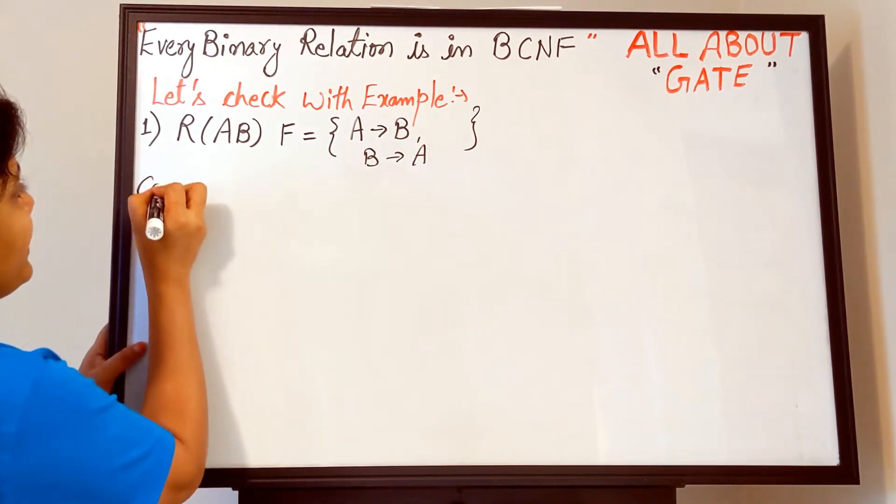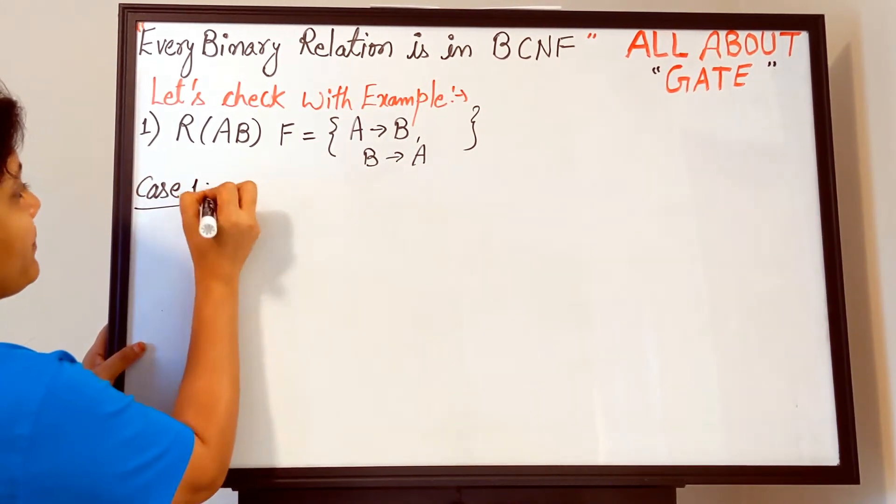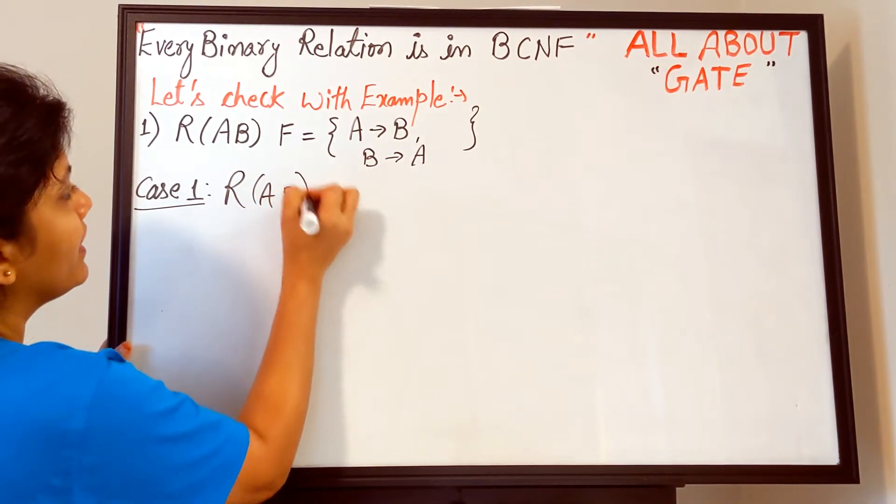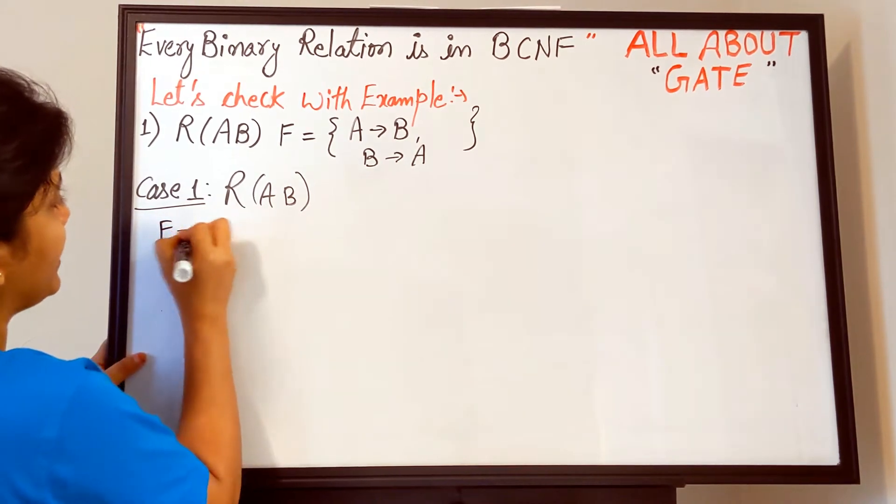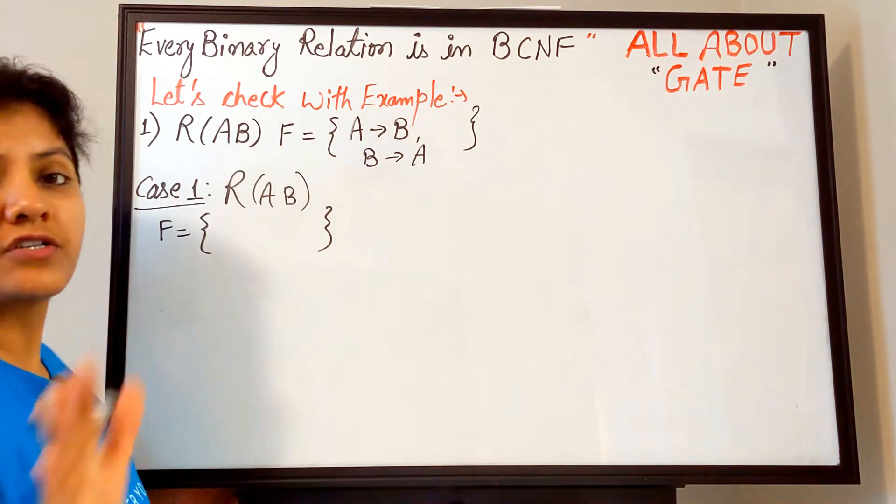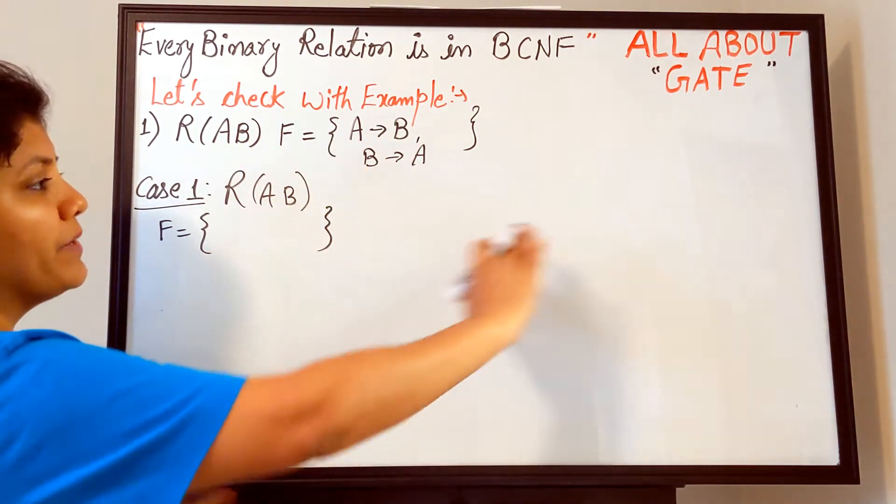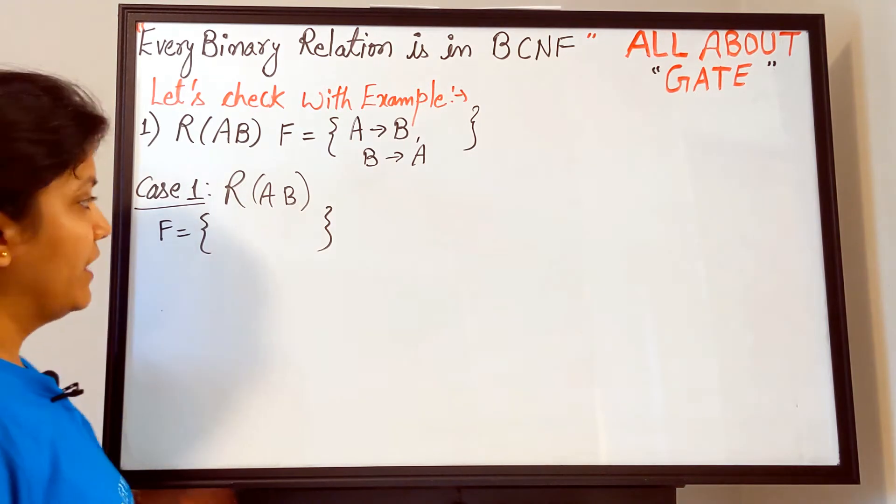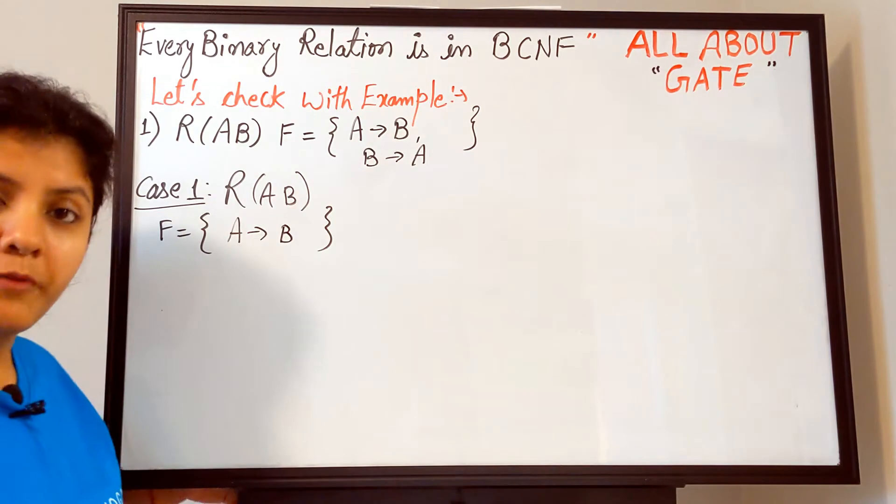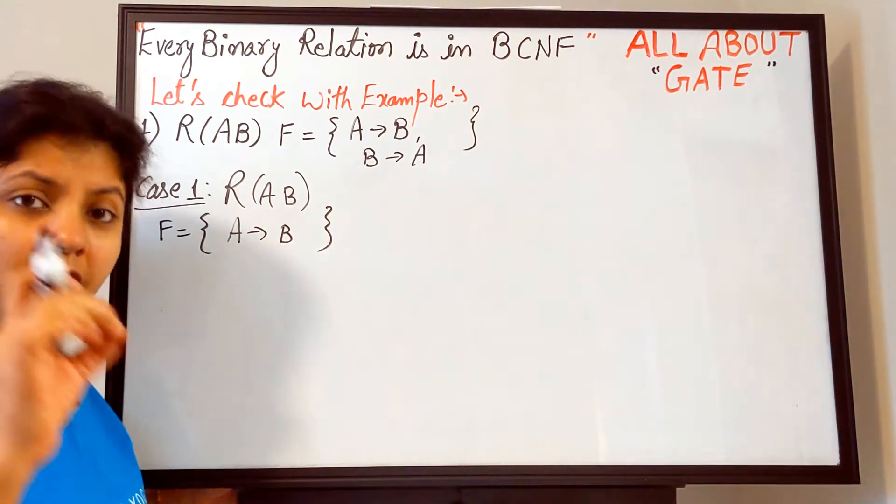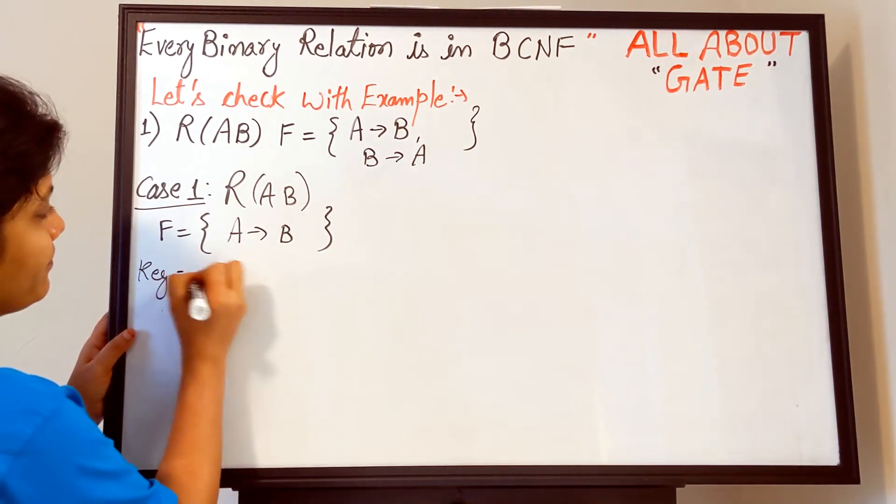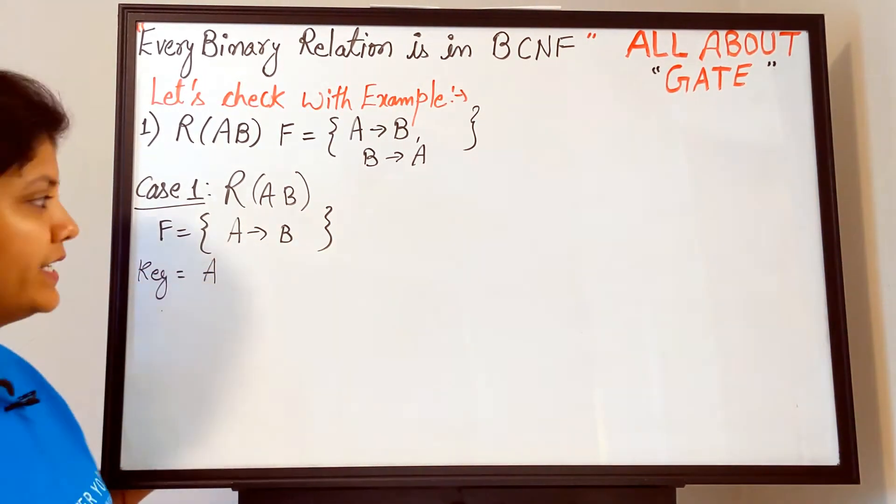For this example, I am going to take up various cases. Case number one: the relation is as it is R(A,B). What I am going to change is the functional dependency set. Out of these two functional dependencies, I am going to make combinations. The first combination says A determines the value of B. This is the only functional dependency present in this relation. For that matter, you all know what is the key—nothing but A.